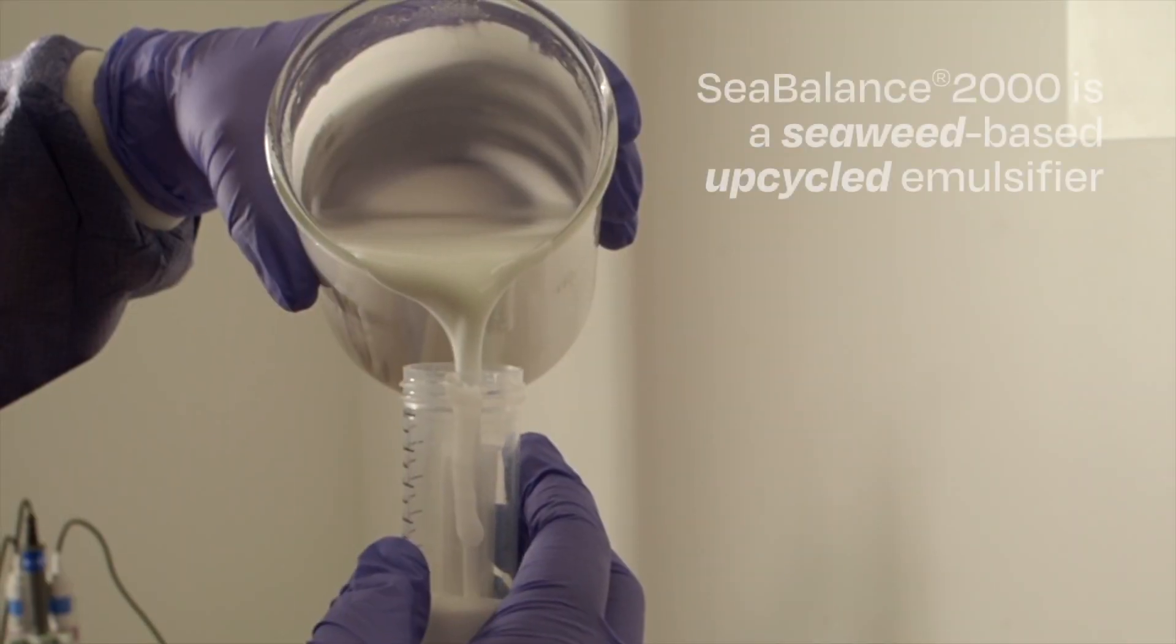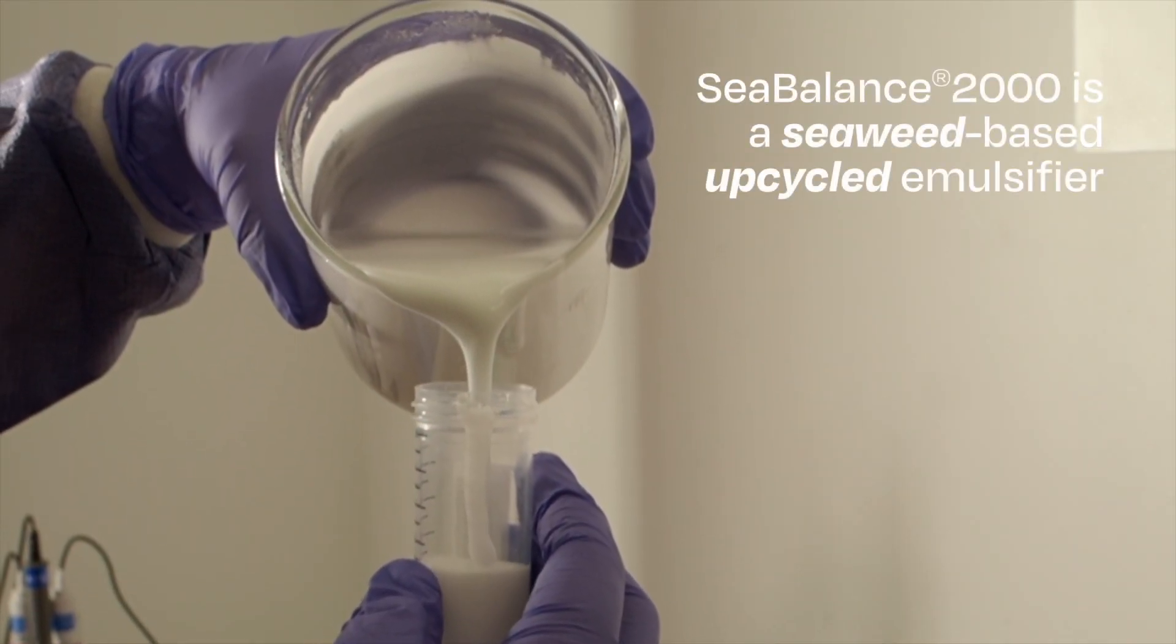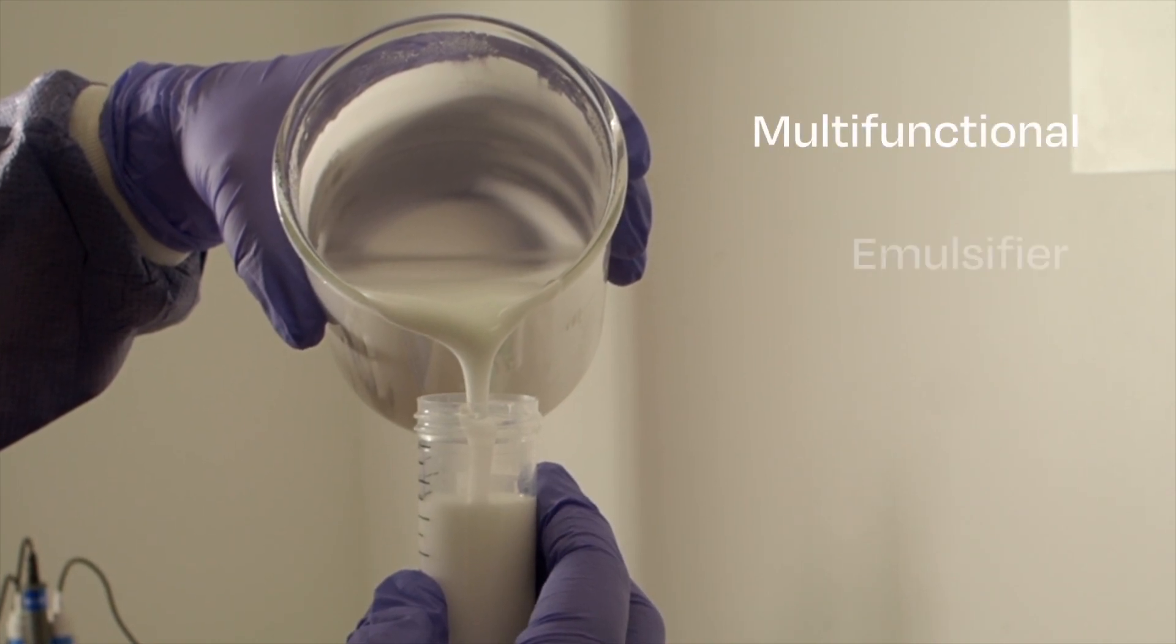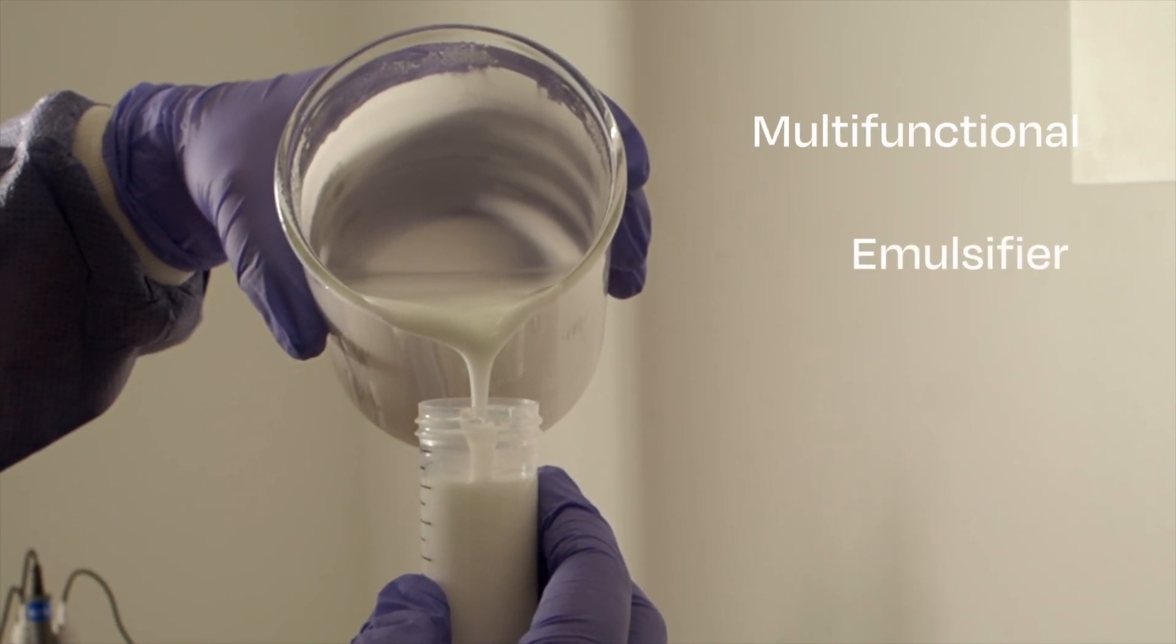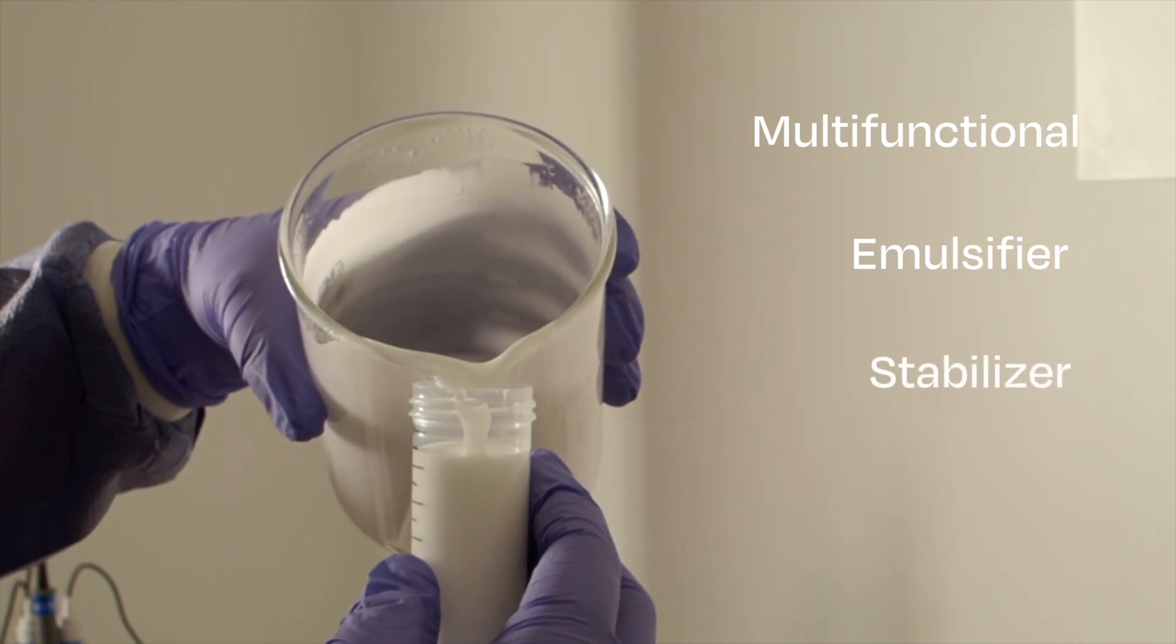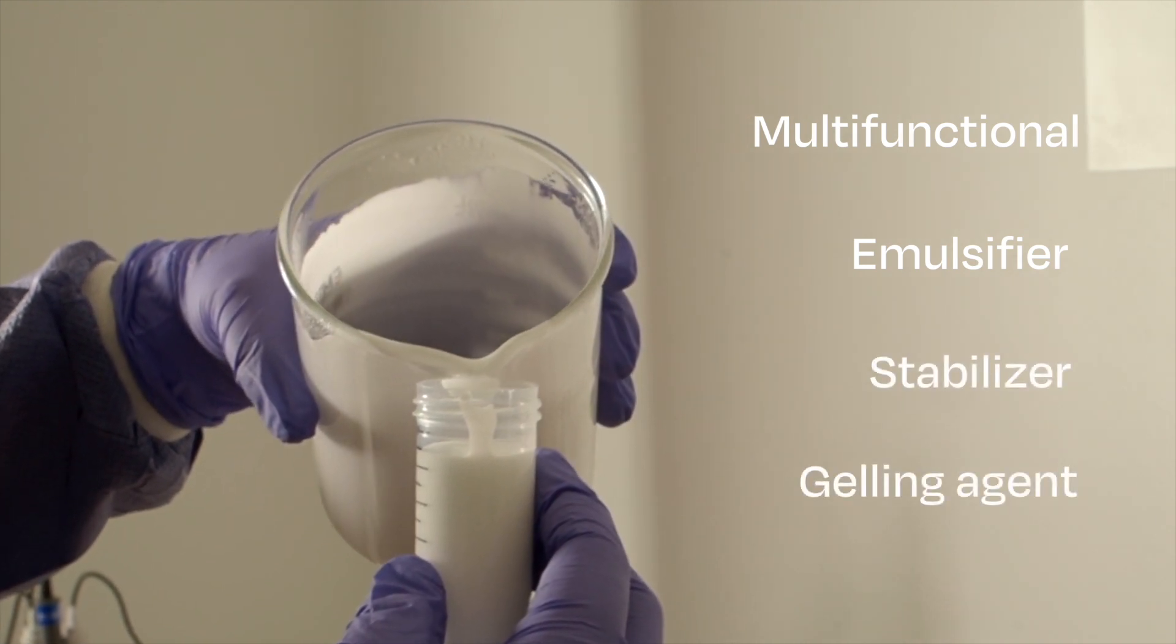Seabalance 2000 is a seaweed-based upcycled emulsifier. It is multifunctional, serves as an emulsifier for fluid lotions and light gel creams, a stabilizer for all kinds of emulsions, and can even be used as a gelling agent for fluid aqueous serums.